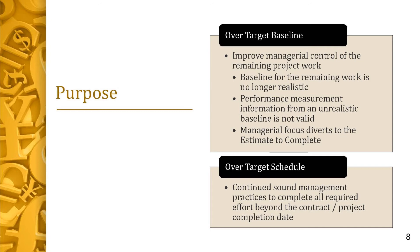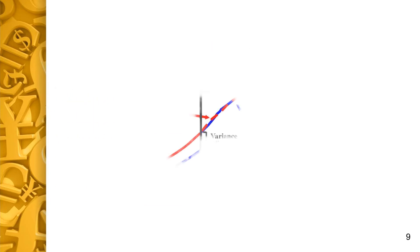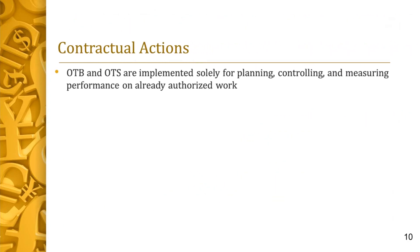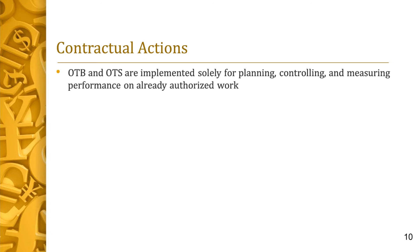The purpose of an over-target schedule is to facilitate continued sound management practices to complete all work beyond the contract and project CD4 completion date. This is an illustration of both an over-target baseline and an over-target schedule. Notice the performance measurement baseline from time now to planned completion. In this example, the decision was made to eliminate both cost and schedule variances, so BCWS and BCWP were set equal to ACWP. Note that the OTB and OTS are implemented solely for planning, controlling, and measuring performance on already authorized work.